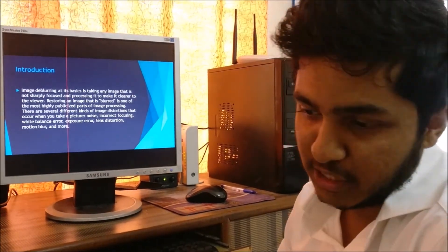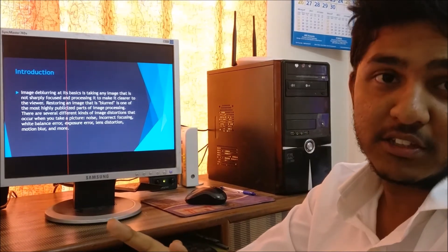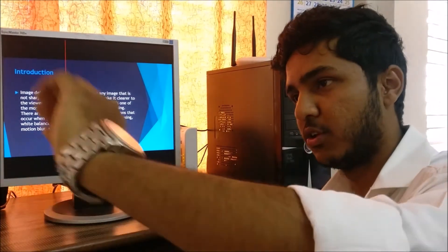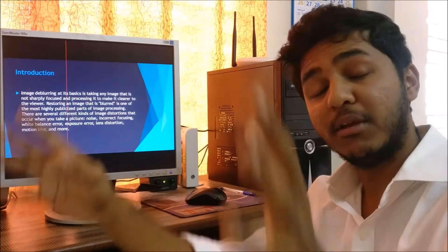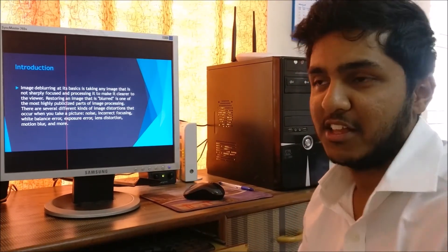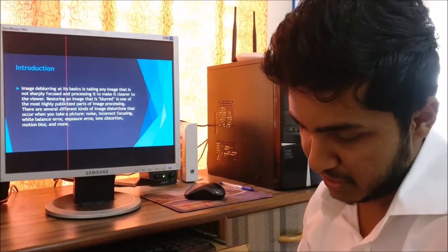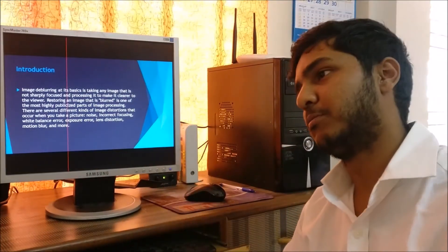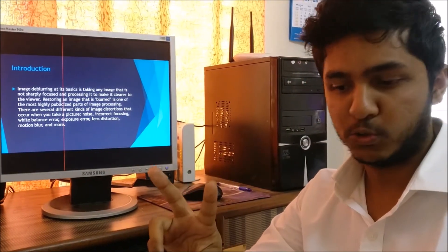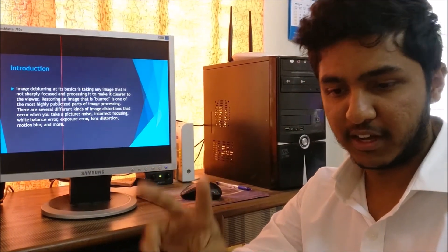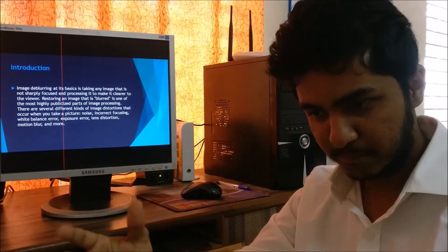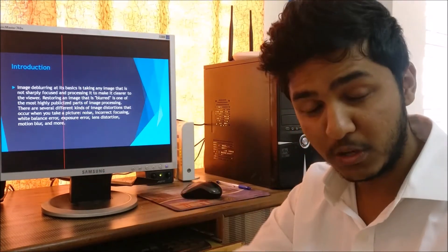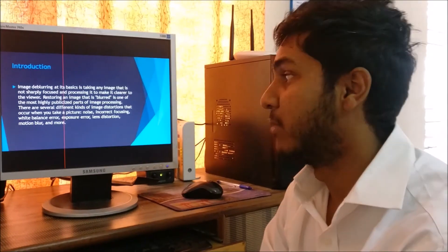The third is exposure error. Suppose different parts of the image have different exposure of light coming off it and falling on the lens — the whole image results in a blurred image. White balance error is the error when you do not adjust the colors properly. Suppose there is a point where two sharply different colors meet; at the demarcation these two colors get smudged and the whole image becomes blurred. That is white balance error.